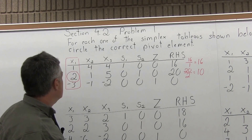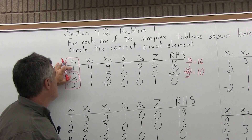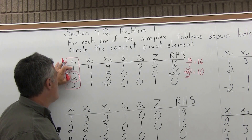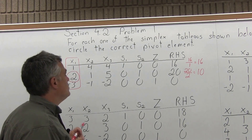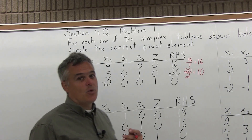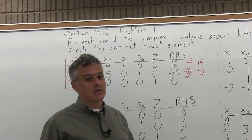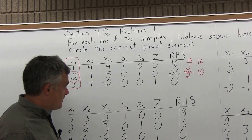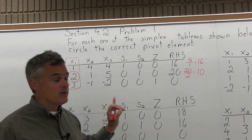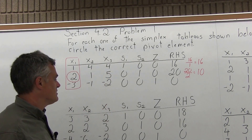If we did have to pivot, we would turn that 2 into a 1 and then zero out the rest of the X1 column. When you do pivot, even though there's a 1 in the same column, you can't just swap rows. You have to multiply the whole row by 1 over 2.